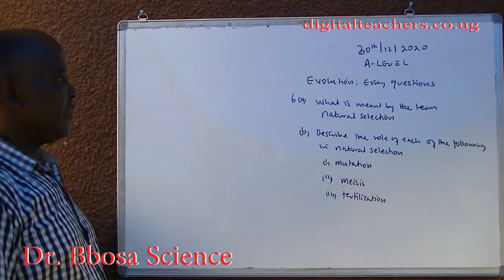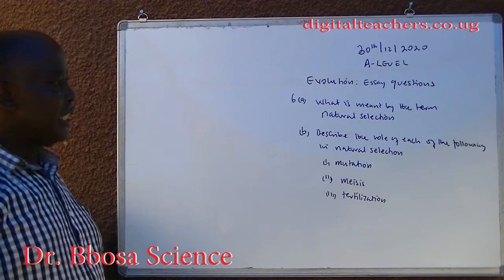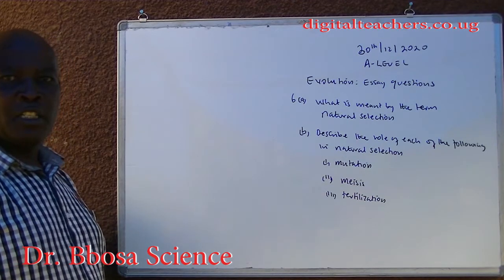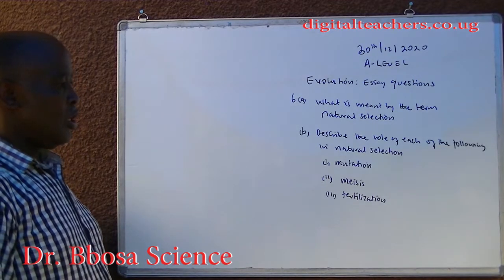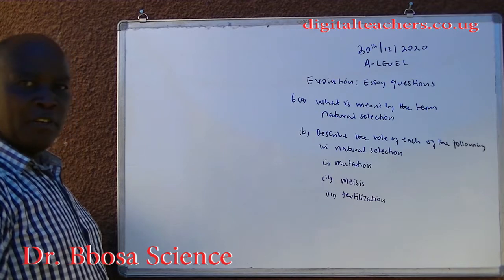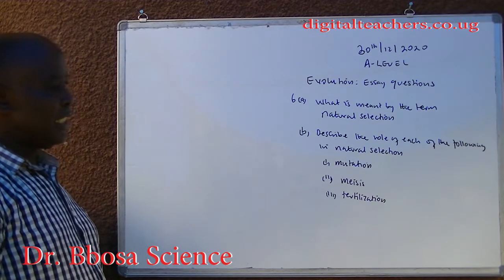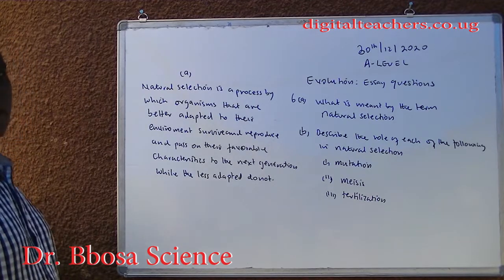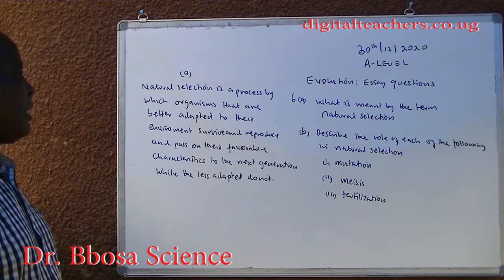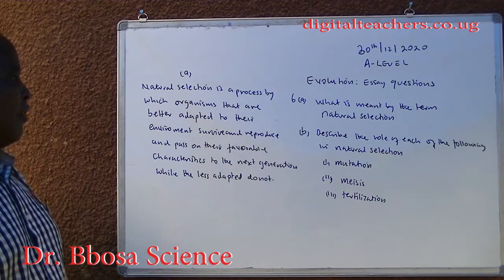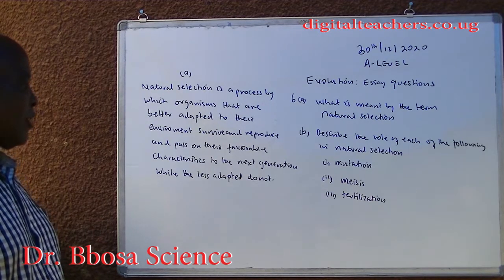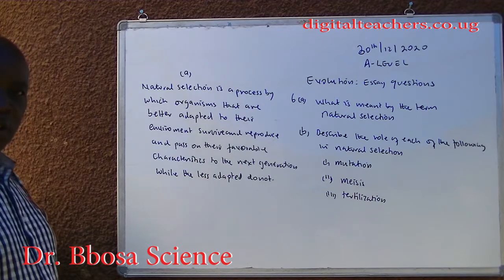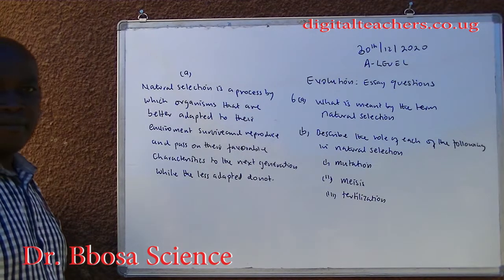Number 6. What is meant by the term natural selection? Describe the role of each of the following in natural selection: mutation, meiosis, and fertilization. A. Natural selection is a process by which organisms that are better adapted to their environment survive and reproduce and pass on their favorable characteristics to the next generation, while the less adapted do not.